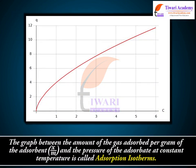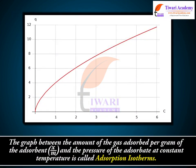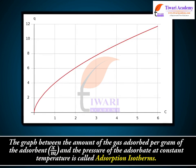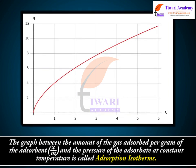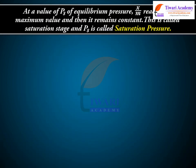The graph between the amount of gas adsorbed per gram of the adsorbent, x/m, and the pressure of the adsorbate at constant temperature is called the adsorption isotherm. At a value of p_s, the equilibrium pressure, x/m reaches its maximum value and then remains constant. This is called the saturation stage, and p_s is called the saturation pressure.